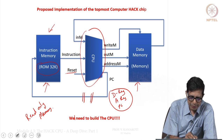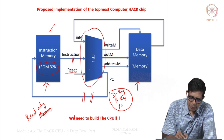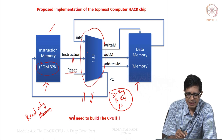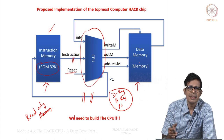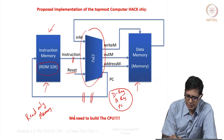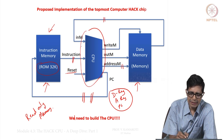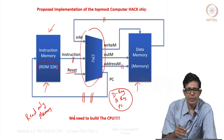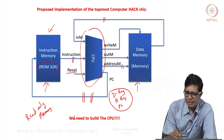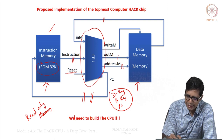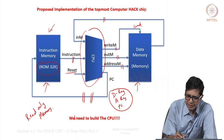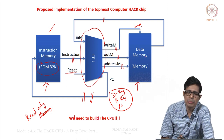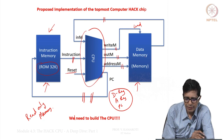Once the program counter value is sent to the instruction memory, it will send the corresponding instruction. The CPU has to interpret and execute that instruction. As part of that execution, it can read from the data memory — if the source operands are in memory, it gives the address and collects the data. Or it can also write into the data memory, giving the address, the data to write, and enabling the memory load so that data is written at that address.